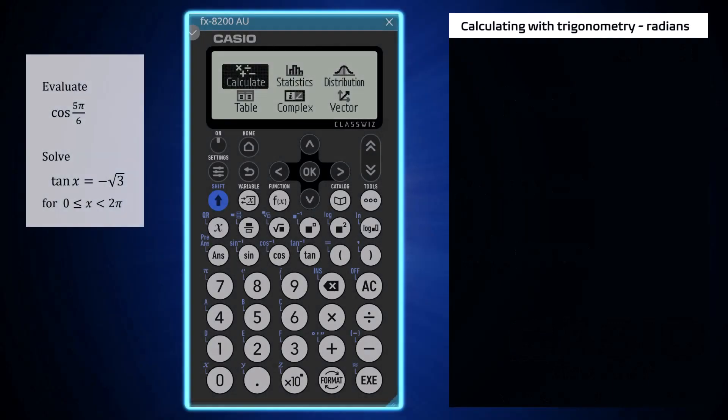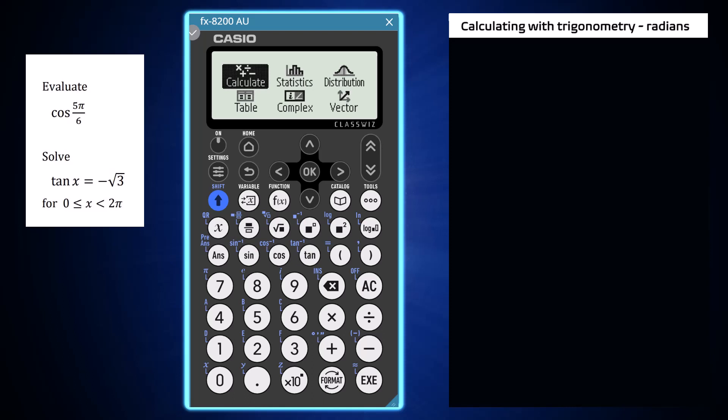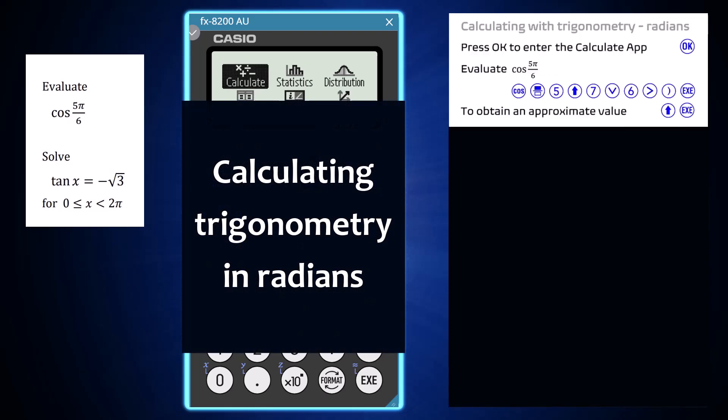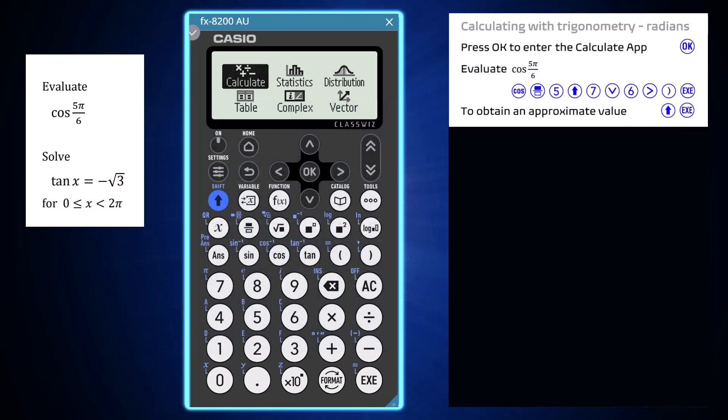Using the Calculate app of a Casio FX 8200 AU, a range of trigonometric calculations can be performed to evaluate expressions, obtain both exact and approximate results, and help solve trigonometric equations. To open the Calculate app from the home screen, press OK or Execute.